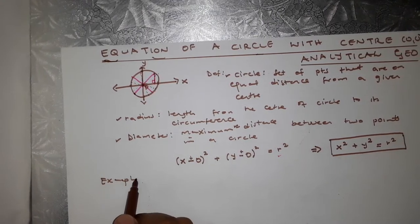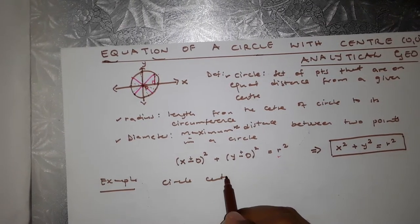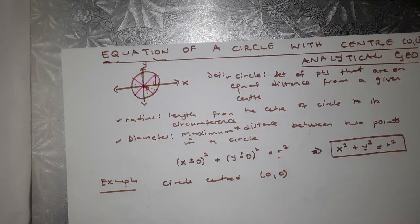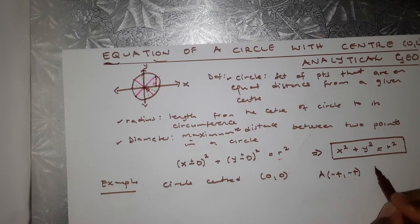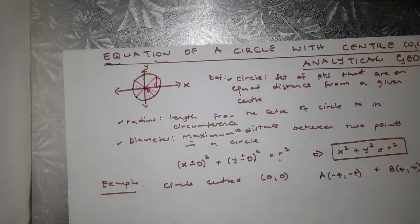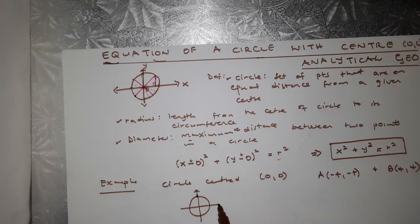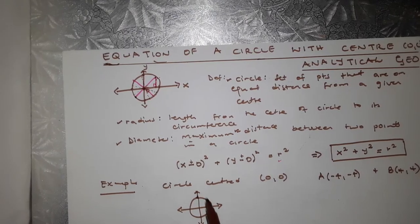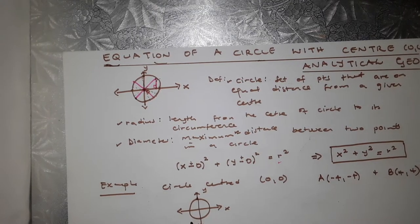Let's do an example. You are given a circle centered at the origin (0, 0), and this circle has two points on its circumference: A which is (−4, −4), and B which is (4, 4). They ask us to find the equation of this circle. Drawing this out: the circle is centered at the origin, point A is in the third quadrant and point B is in the first quadrant.